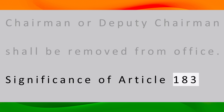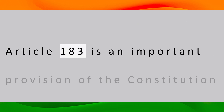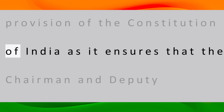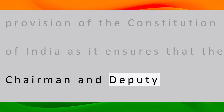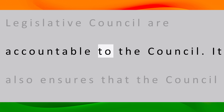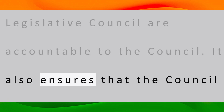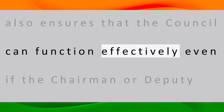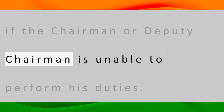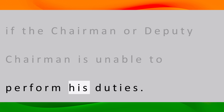Significance of Article 183: Article 183 is an important provision of the Constitution of India as it ensures that the Chairman and Deputy Chairman of the State Legislative Council are accountable to the Council. It also ensures that the Council can function effectively even if the Chairman or Deputy Chairman is unable to perform his duties.